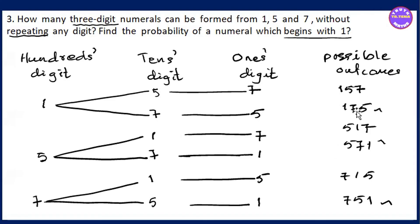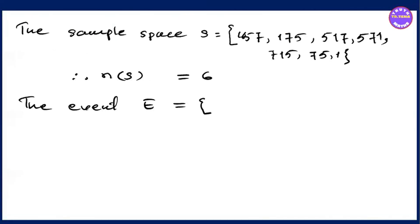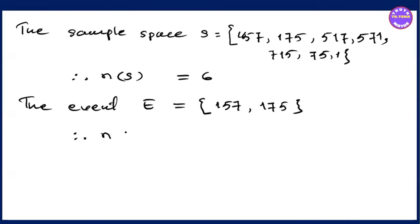157 is 175. 157. Therefore N of E — the numbers beginning with 1 are 157 and 175.